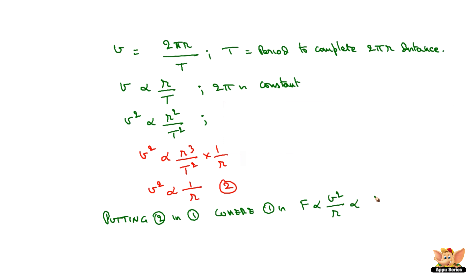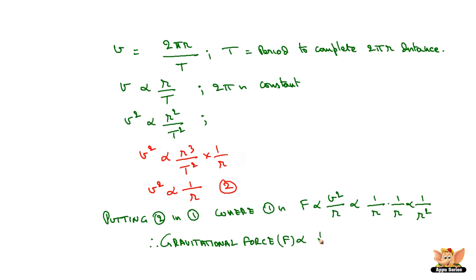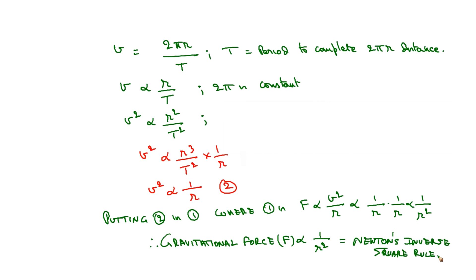Substituting equation two into equation one — where equation one is F proportional to v²/r — instead of v², we put 1/r, giving F proportional to 1/r × 1/r, which is proportional to 1/r². So we say that gravitational force is proportional to 1/r². This has been derived using Kepler's third law and mathematical manipulation to arrive at Newton's inverse square rule. The key factor is that v² ∝ r³/T², where r³/T² is a constant from Kepler's third law, leading to v² ∝ 1/r, and applying this in the force equation gives the inverse square rule.